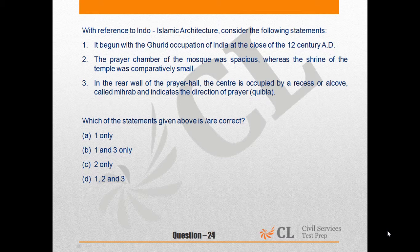Statement 2: The prayer chamber of the mosque was spacious, whereas the shrine of the temple was comparatively small. Statement 3: In the rear wall of the prayer hall, the center is occupied by a recess or alcove — the mihrab — which indicates the direction of prayer, Qibla.